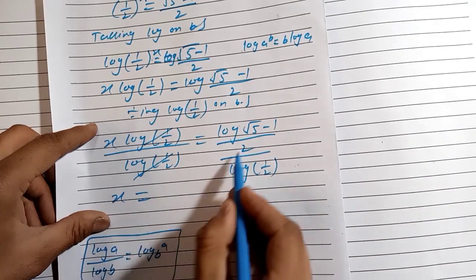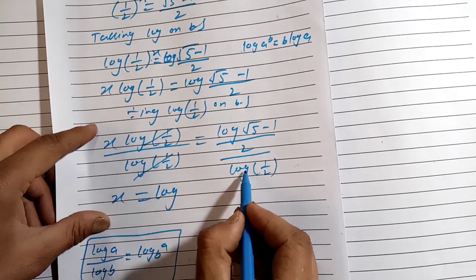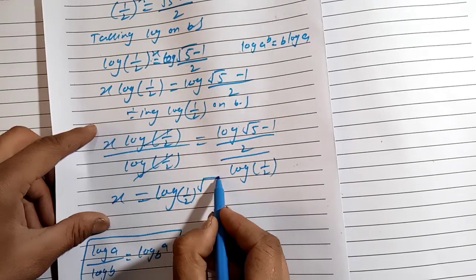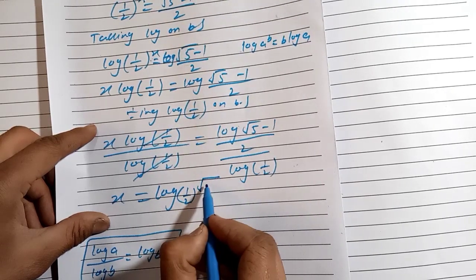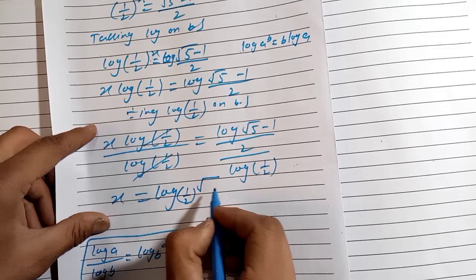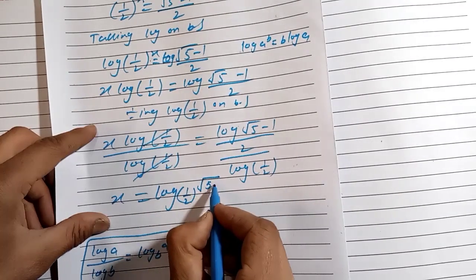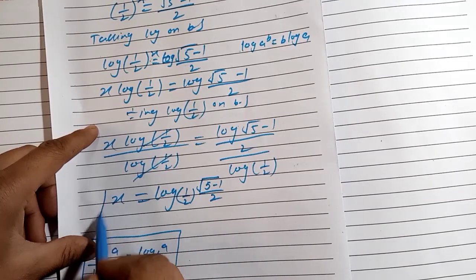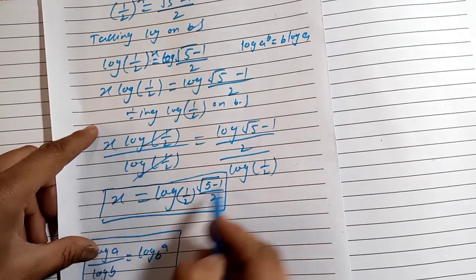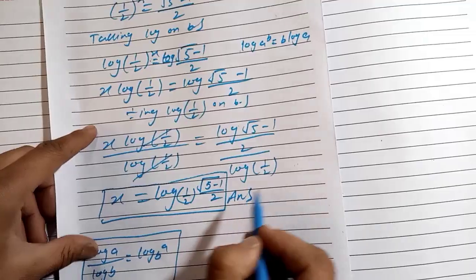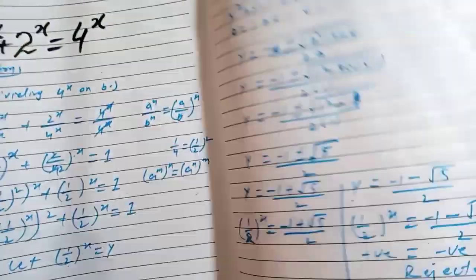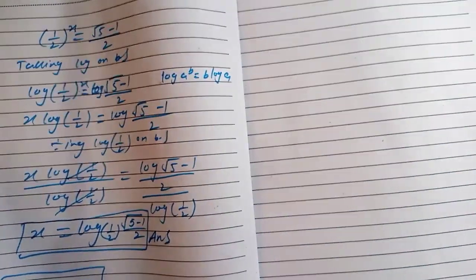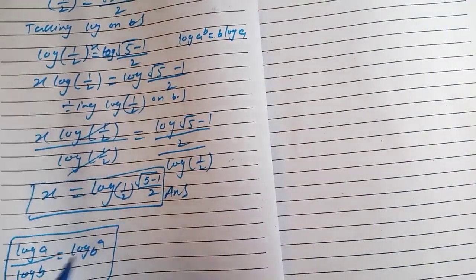Using the change-of-base formula, this can be written as x = log base (1/2) of (√5 - 1)/2. This is our final answer.